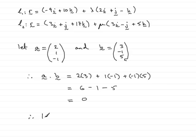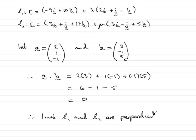So therefore lines L1 and L2 are perpendicular. And that brings us to the end of this part of the question.